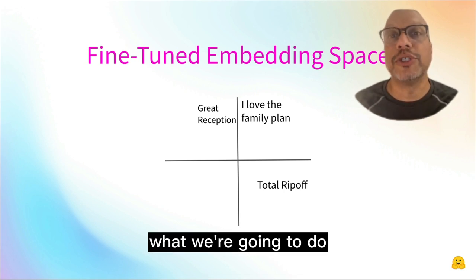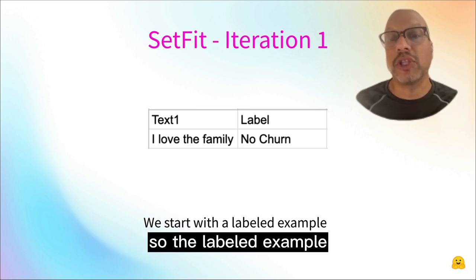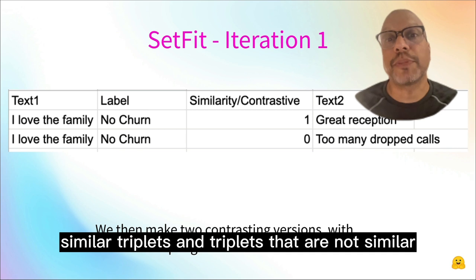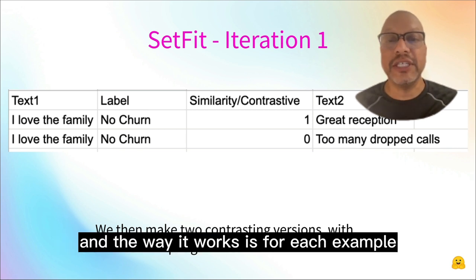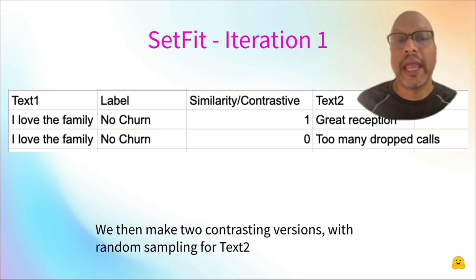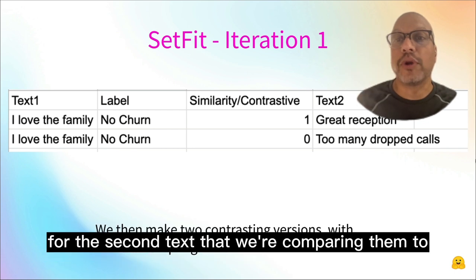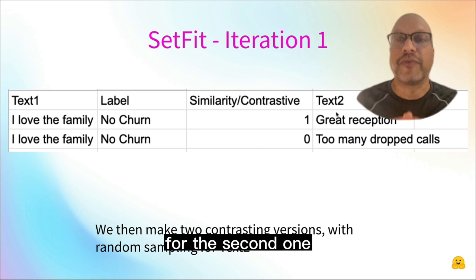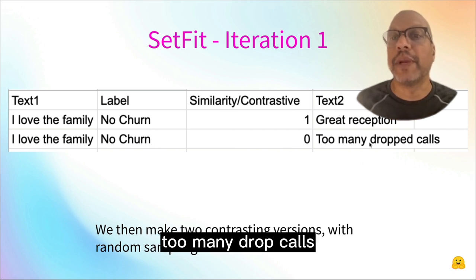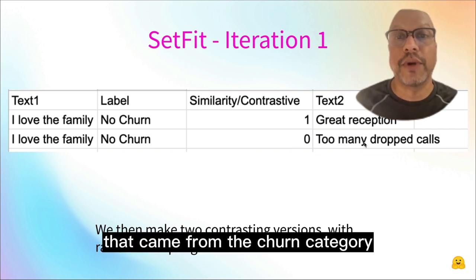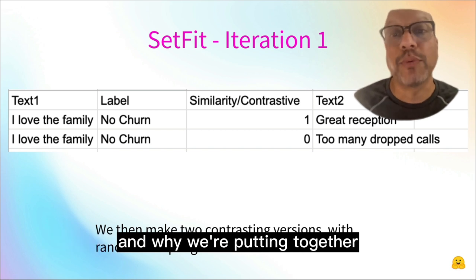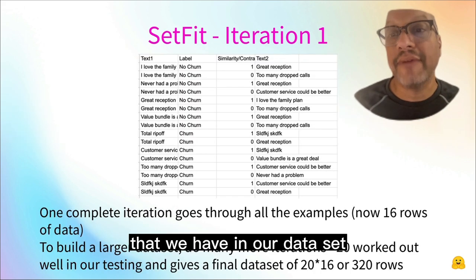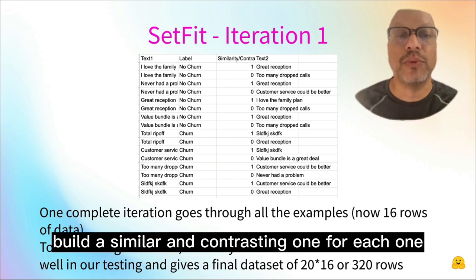To do this, we're going to help the model along by taking the labeled text that we have and building examples of similar triplets and triplets that are not similar. For each example, we build two contrasting versions, using random sampling to get the second text we're comparing to. Text one and text two, when similar, are both things that have no churn. For the second contrasting pair, 'I love family' is paired with 'too many dropped calls' from the churn category. We go through all examples in our dataset and build a similar and contrasting one for each.